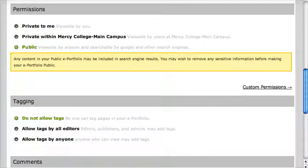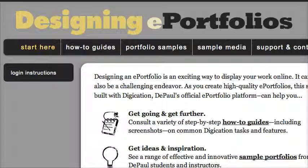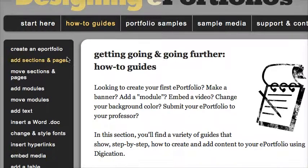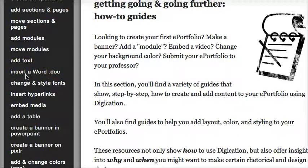So how do I get help? There are two websites you can go to. The first one, support.digication.com, will have tutorials and videos. The second one — we found this — it's made by DePaul University: depaul.digication.com/get-help. It's a really nice website. Under the heading How To Guides on the left, they've broken out all the different things you can do to change your portfolio — insert text, insert documents, change the links, embed media.